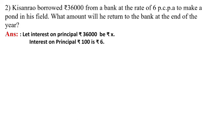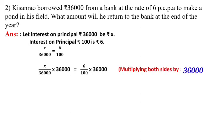Taking the proportion: interest upon principal means x upon 36,000 equals 6 upon 100. Multiplying both sides by 36,000, so here we get 36,000 will cut from the left side. It remains x equals 36,000 times 6 divided by 100. So we get 360 times 6.